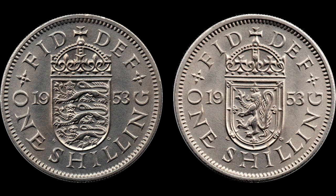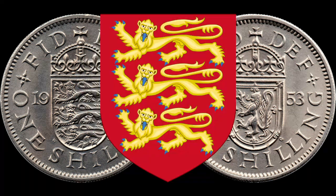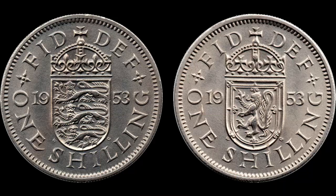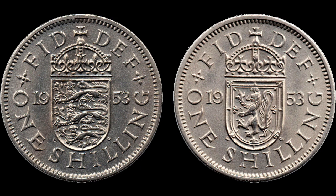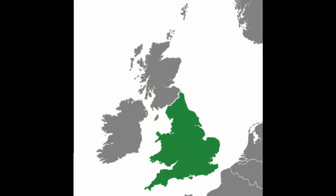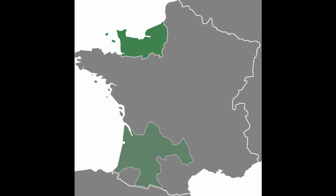The blazon for the English arms is: gules, three lions passant guardant in pale or, armed and langued d'azur. The arms of England were first used by Richard the Lionheart. The three lions represent the Kingdom of England, the Duchy of Normandy, and the Duchy of Aquitaine.